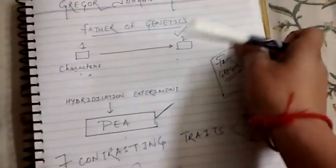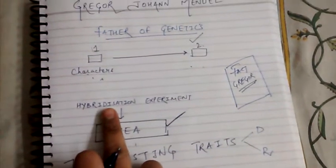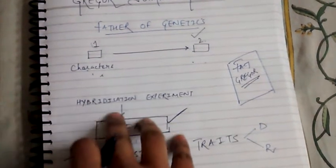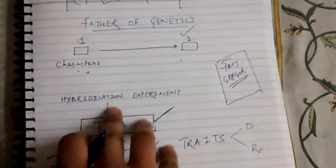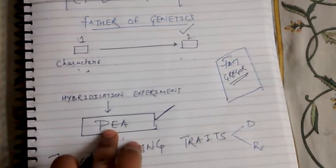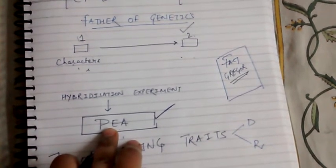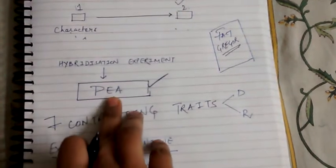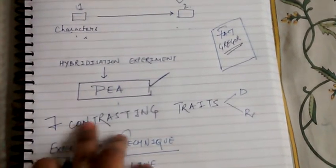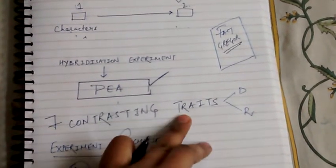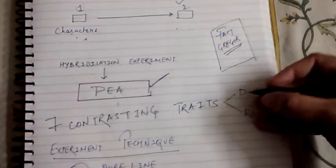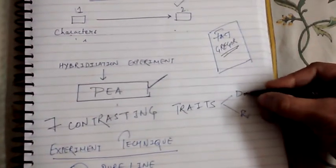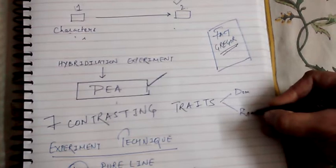He actually did some hybridization experiments, and that too on pea, which we call Pisum sativum. In pea, he found 7 contrasting traits, which he divided — I have written as DNR — into dominant and recessive.